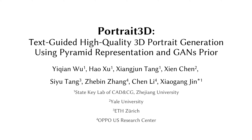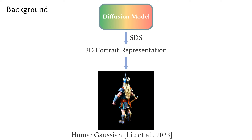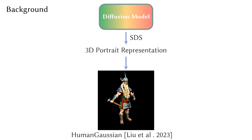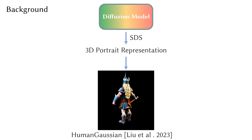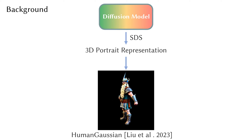Portrait 3D: text-guided high-quality 3D portrait generation using pyramid representation and GANs prior. The introduction of the diffusion model and score distillation sampling has spurred the rapid development of text-to-3D portrait generation by distilling the knowledge of 2D image prior into 3D representation.